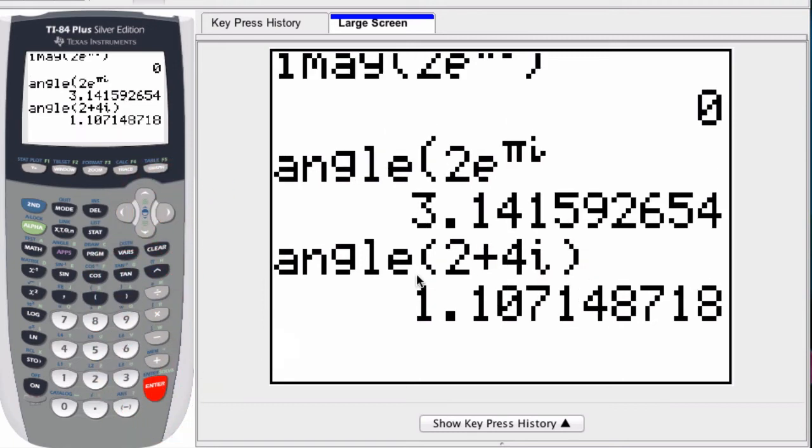What the graphing calculator is actually doing, and I guess we can talk about this in other videos, and we cover these kind of things in complex numbers, it's finding the inverse tangent of b over a. And b, of course,